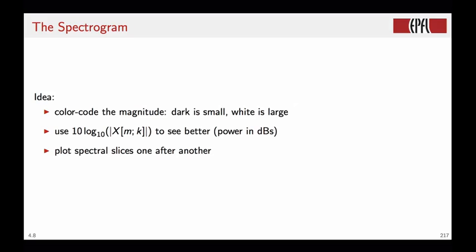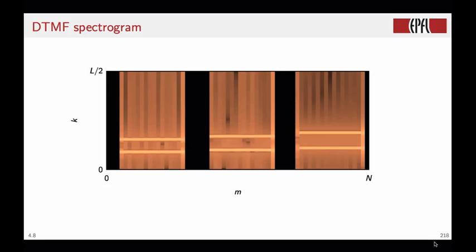And we put the spectral slices, one after another, to obtain an image-like picture of the time-variant spectrum. So this is the spectrogram of the DTMF signal. On the horizontal axis, we put the variable m, so the starting point for each spectral slice. Here on the vertical axis, we put the DFT coefficient. We have a real signal, so we just go from 0 to L over 2, where L is the size of our DFT window. You can see here that the black pixels in the picture correspond to very small values for the DFT. So these black areas indicate the silence regions in the DTMF signal.